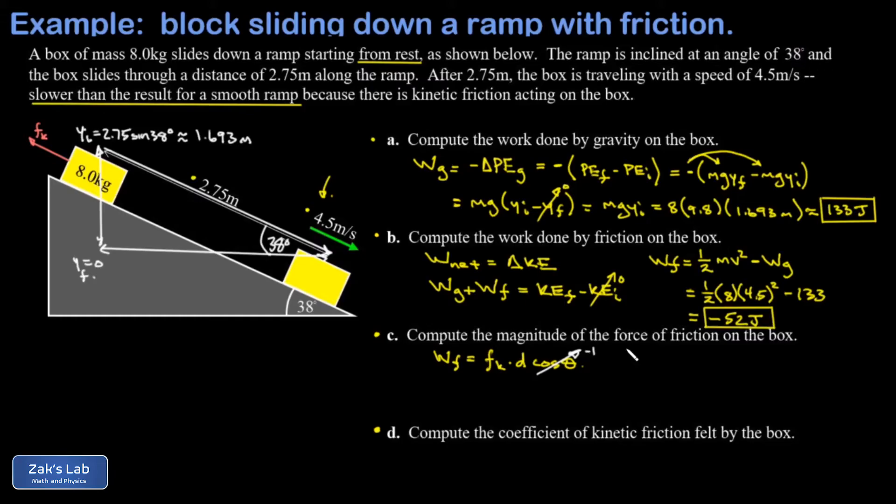So the work done by friction here was negative 52 joules. The magnitude of the force of friction is unknown. The magnitude of the displacement was 2.75 meters. Remember that a joule is a newton meter, so when I cancel those factors of meters I get newtons for the magnitude of the friction force, and I'm carrying around a factor of negative one from that cosine term. Multiply both sides by negative one and we don't have to worry about that.